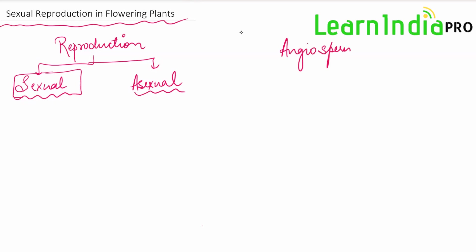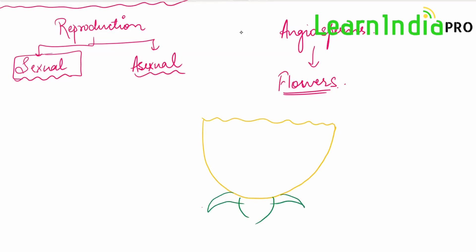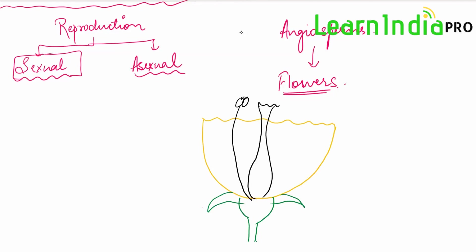We'll be seeing how flowering plants — that is angiosperms — reproduce sexually. In the case of angiosperms, they produce flowers, so they have floral parts. The flower is the reproductive part. If we see the basic diagram of a flower, a flower has petals, it has a lower lobe on which the flower parts are attached, there are green color parts, a stalk, and then there is the male reproductive part and the female reproductive part.